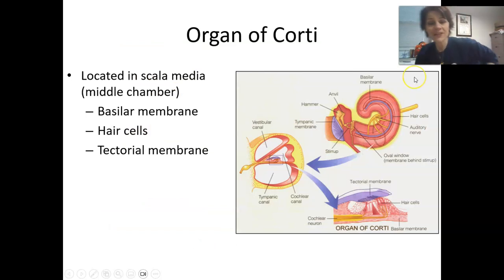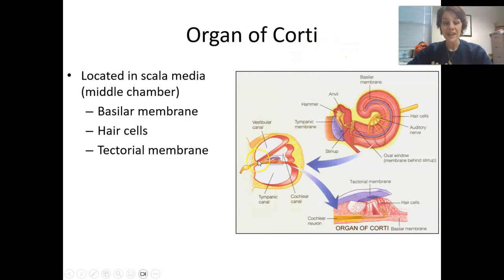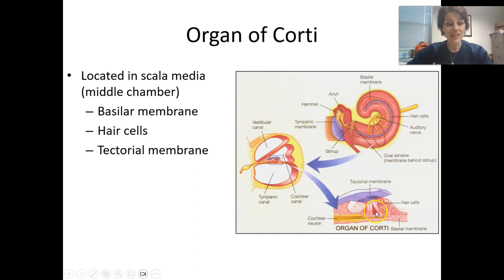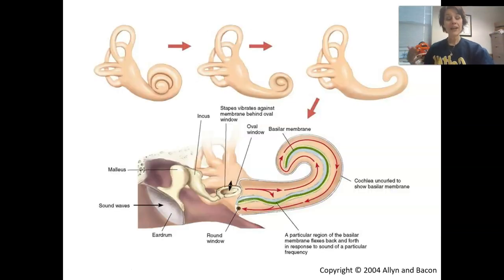Here's another way to look at the organ of Corti. Located in the scala media — the central portion of the cochlea — we have the basilar membrane at the bottom, and our hair cells, which include both outer hair cells and inner hair cells. The inner hair cells are going to be the most important part of this. All hair cells are embedded in the tectorial membrane, which sits right on top of them.